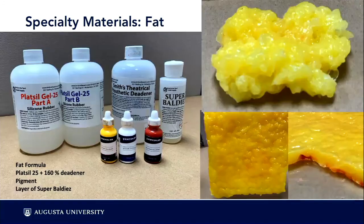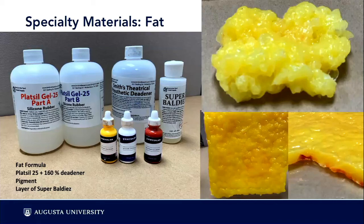The other special effects material is for fat simulation. The recommendation is Platsil 25 with a deadener added — when you add deadener it essentially inhibits the cure of the silicone, making it very soft and sticky. You then have to encapsulate it in a material called Baldies, which is a bald cap material. I'll pass it around so you can touch it — it provides a lot of realism for the simulation model.